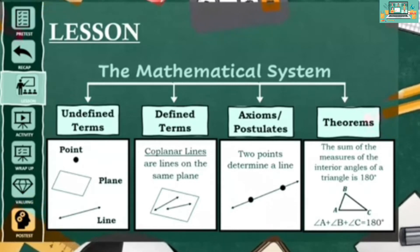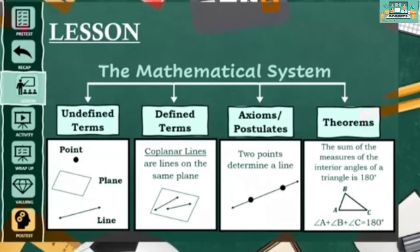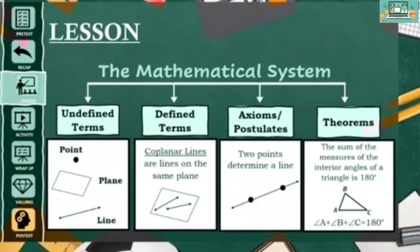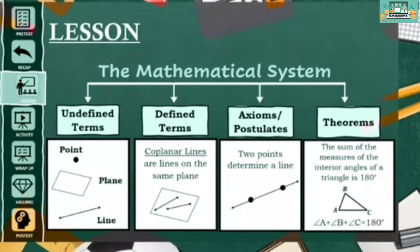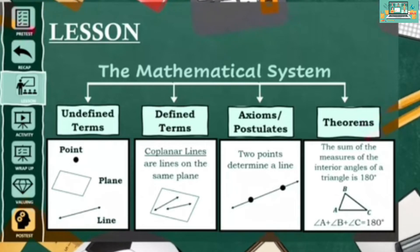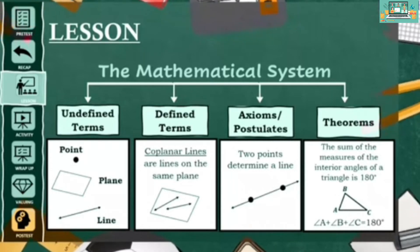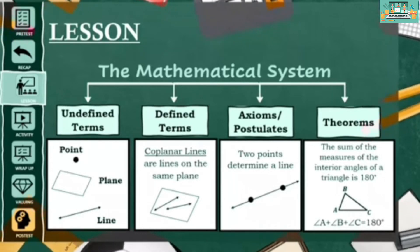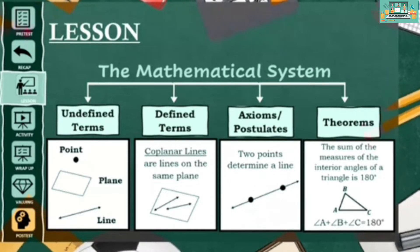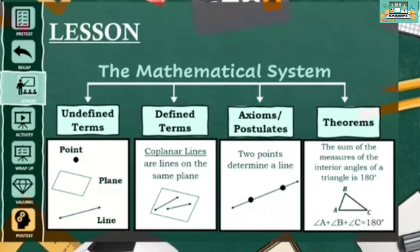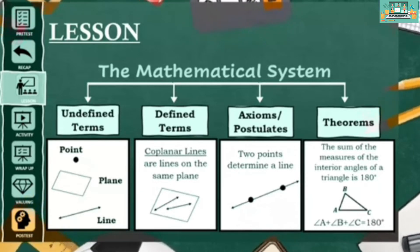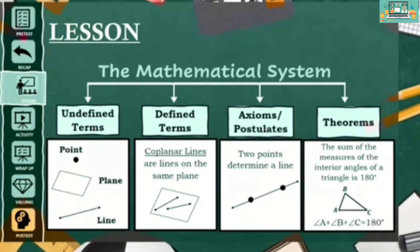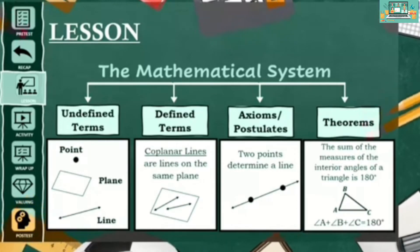Another kind of statement in the mathematical system is the theorem. But unlike postulates, theorems must be proven first. To prove a statement, we must use known facts such as definitions, postulates, or other theorems. We're going to discuss more about definitions, postulates, and theorems in our upcoming videos.